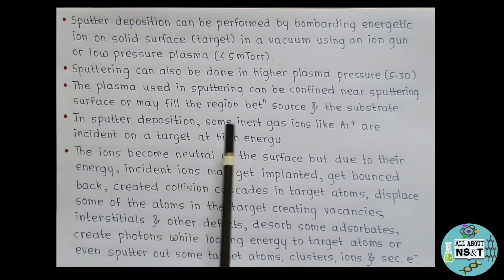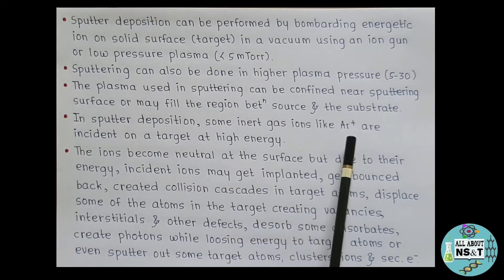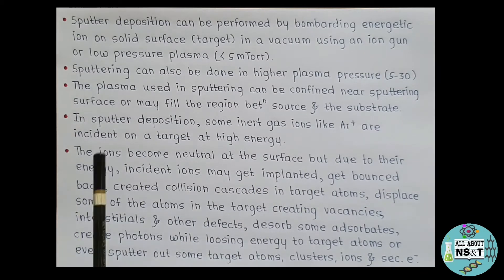In sputter deposition, some inert gas ions like argon, that is Ar+, are incident on a target at high energy. The ions become neutral at the surface. Due to their energy, incident ions may get implanted, get bounced back, create collision cascades in target atoms, displace some of the atoms in the target creating vacancies, interstitials and other defects, desorb some adsorbates, create photons while losing energy to target atoms, or even sputter out some target atoms, clusters, ions and secondary electrons.